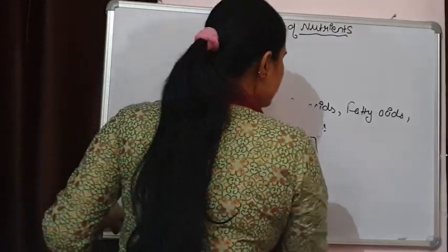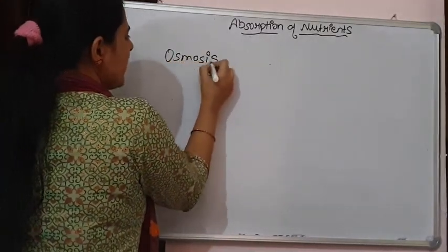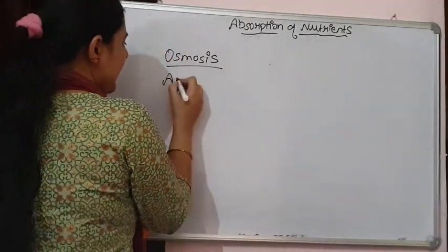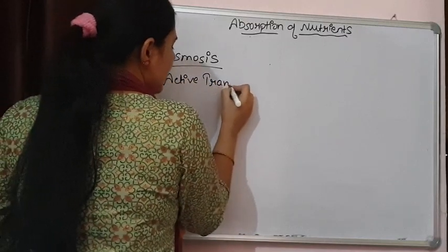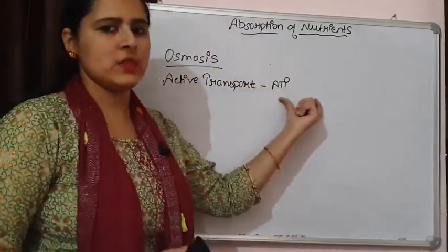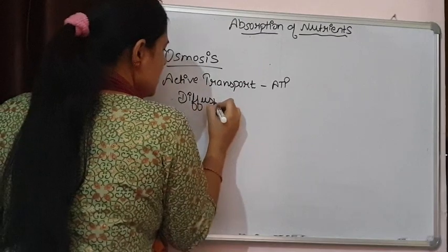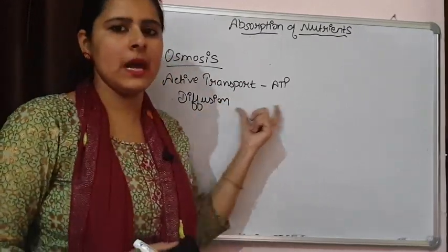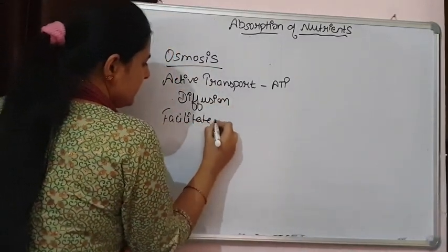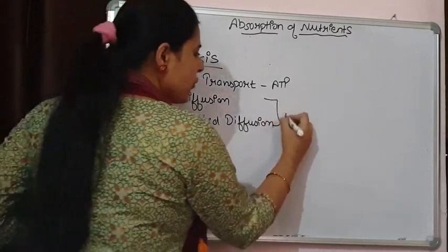Now let's see the methods by which absorption takes place. There are various methods. For example, it can be osmosis — we know there is movement of solvent from higher concentration to lower concentration. Then it can be by active transport, where ATP is required and our body expends ATP for transport. It can also be diffusion, where substances simply move from higher to lower concentration. Then it can be facilitated diffusion.